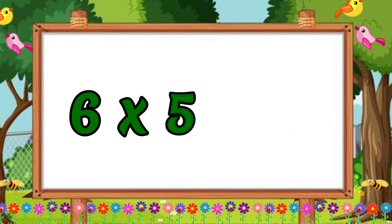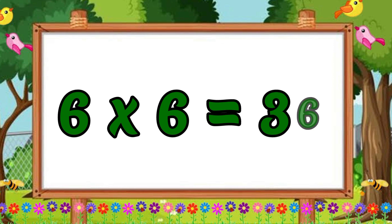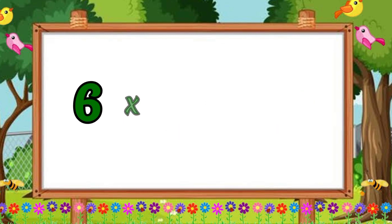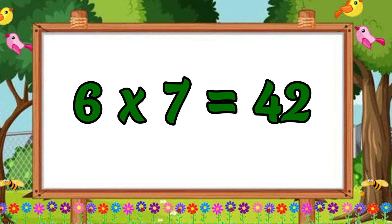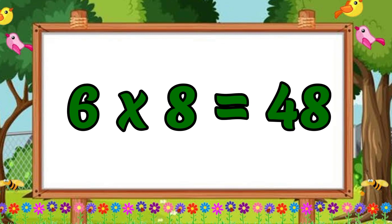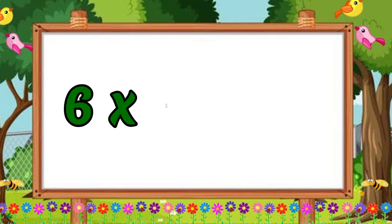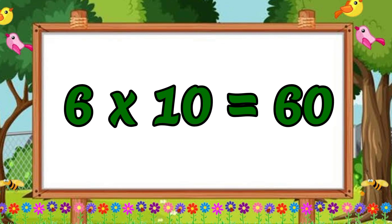Six fives are thirty. Six sixes are thirty-six. Six sixes are thirty-six. Six sevens are forty-two. Six sevens are forty-two. Six eights are forty-eight. Six eights are forty-eight. Six nines are fifty-four. Six nines are fifty-four. Six tens are sixty. Six tens are sixty.